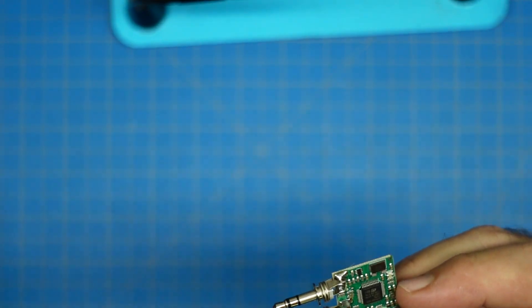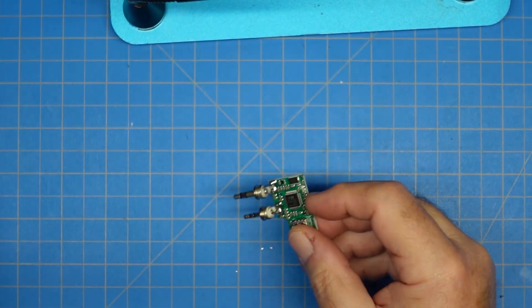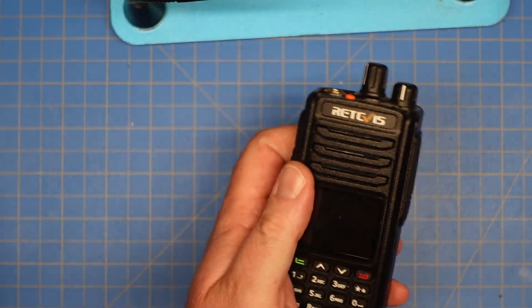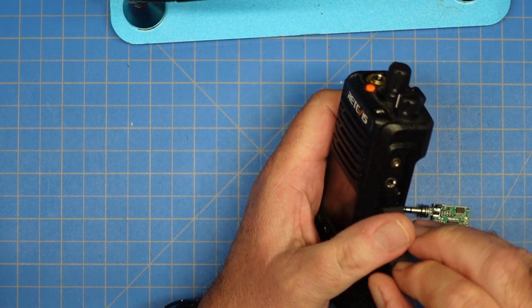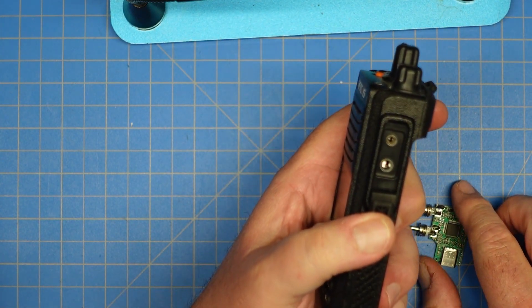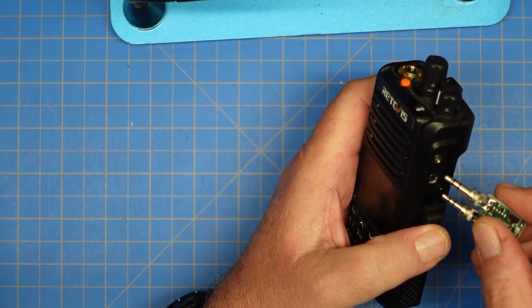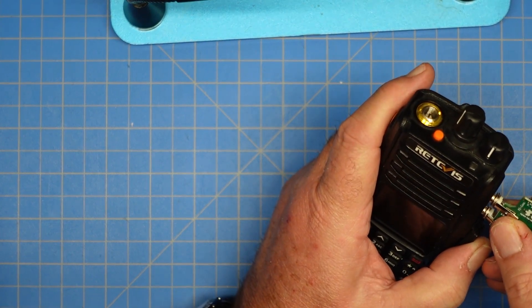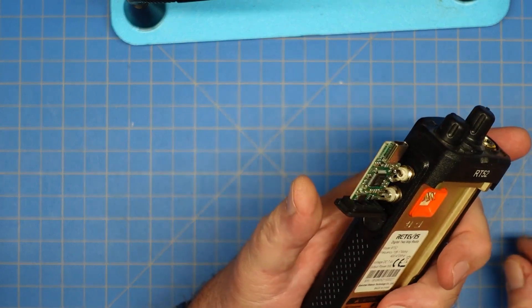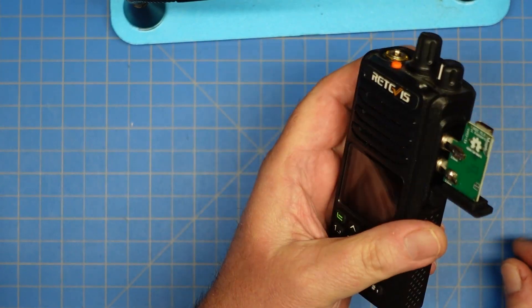So let me grab an HT real quick and let's make sure it fits. Alright I've got my Retevis RT52 HT and as you can see there are our connectors. And this should line up like that perfectly and go all the way in. And there it is. Good to go.